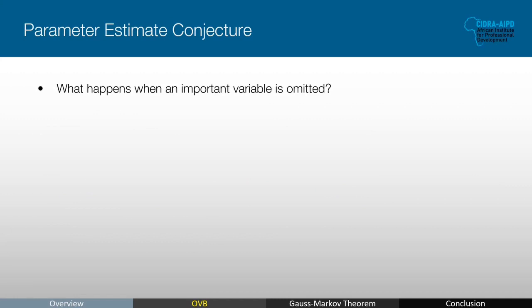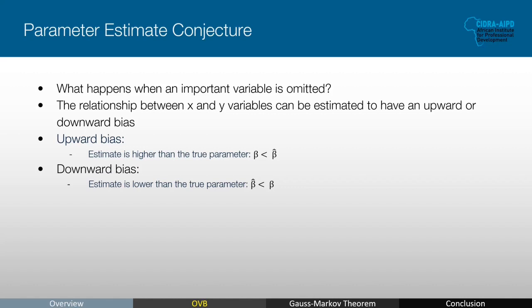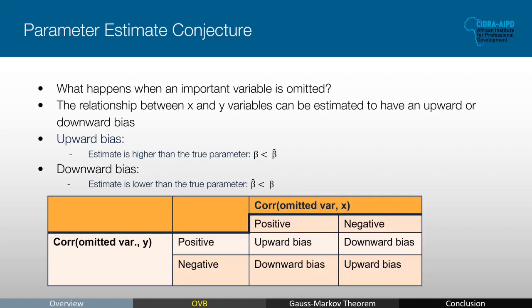Let's think about what may happen when an important variable is omitted from the model and build some intuition to understand the omitted variable bias. We expect something to be affected on the model, and this something is the parameter estimate, which you can directly observe after doing regression. Other metrics like variance and p-values need more computation. So we can expect one of two things: an upward bias or a downward bias. Upward bias is when the parameter estimate is higher than the population parameter, and downward bias is when the parameter estimate is much lower. This is a direct result of the correlation between the omitted variable, the response, and the existing variable, as summarized in a table.